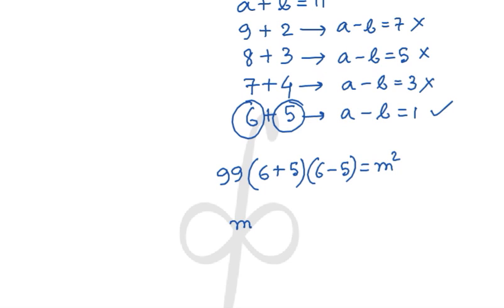So m² is equal to 9 × 11² = 33². So the value of m is coming out to be 33.